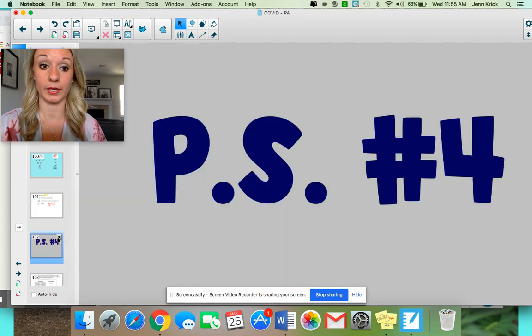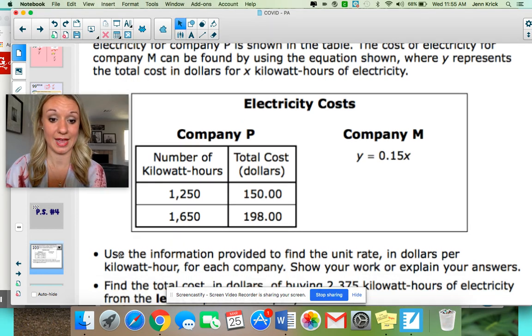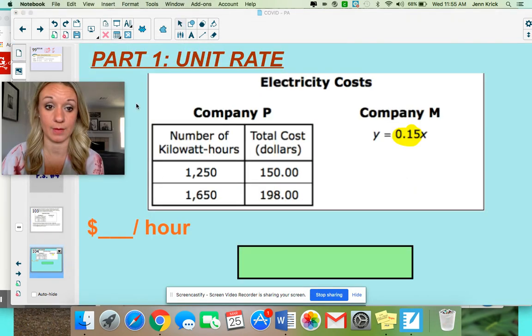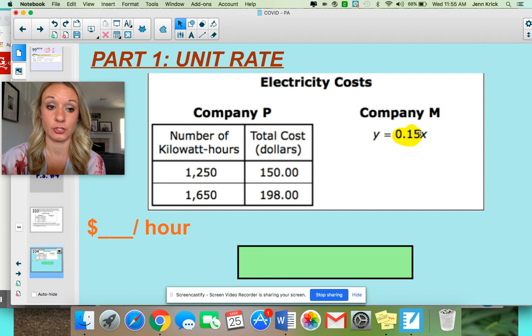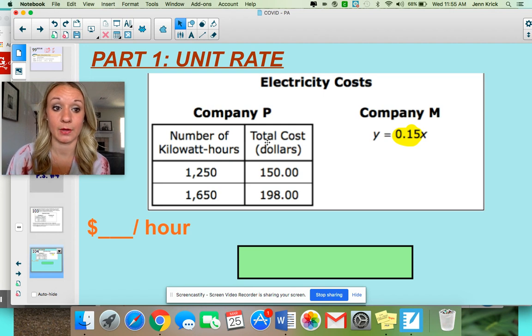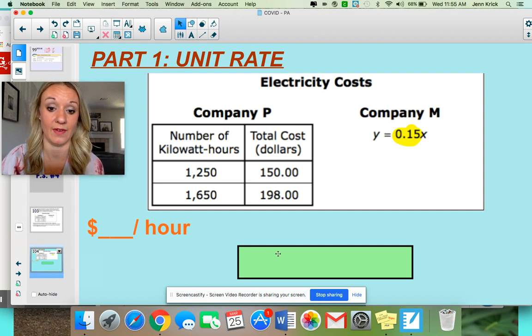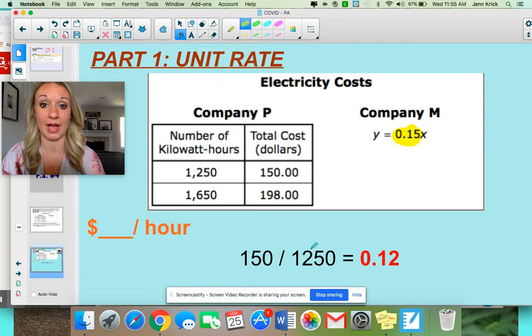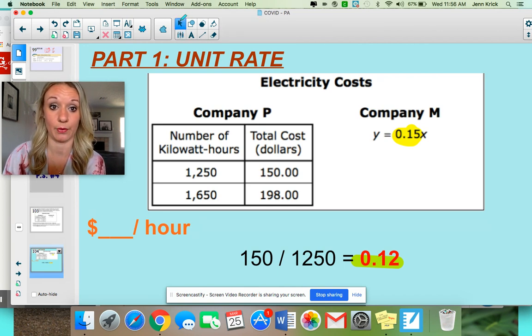On to problem solving number four. Let's look at the first question. You were comparing two companies and electricity costs. And we're really looking at unit rates. It asks you to do two main things. For the first question, it asks you to find the unit rate of each company. Now for company M, it tells you the unit rate right away, 0.15. So that means it's 15 cents per hour. That's your unit rate. That's your constant rate of change. You already solved for that one. For company P, though, we have to find the unit rate, which means that we need to find the number of dollars per hour. To do that, we just have to divide. So you can do 150 divided by 1250, which gives you 0.12. Now in the context of the problem, that means that it's 12 cents per hour. So right now, you know that company M is more expensive because it's 15 cents per hour. Company P is cheaper. It's less expensive because it's 12 cents per hour. So that's part one.